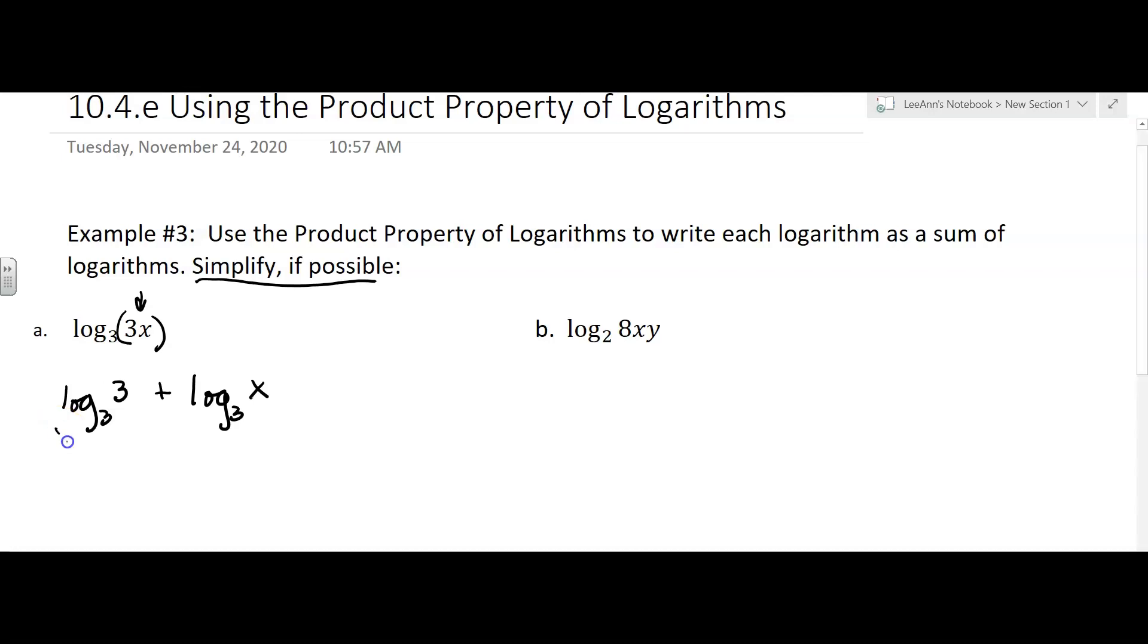Now to simplify, this we can use a property for. That was property 2, if I'm remembering right. And that just equals 1. And that would be simplified. You can't do anything with the other logarithm because we don't know what x is.